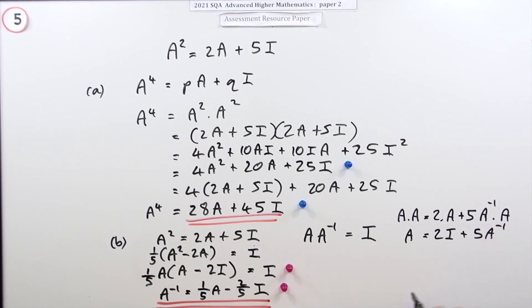And then it's the same as before. So just rearrange that to read A, so I'll take that across and subtract, and then divide by five. Or if you want it split out, a fifth of A minus two fifths of I.